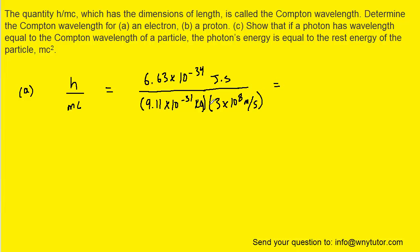So what we can do is pick up our calculators and type this in. And when we do that, we get roughly 2.43 times 10 to the minus 12. And the question notes that the dimensions of the Compton wavelength are the dimensions of length.